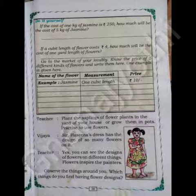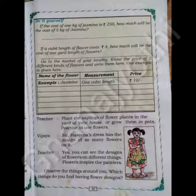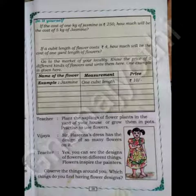Go to the market of your locality. Know the price of 5 different kinds of flowers and write them here. One example is given — observe: name of the flower, measurement, price. For example, jasmine flower, measurement 1 cubit length, rupees 10. Write 5 examples in this box.